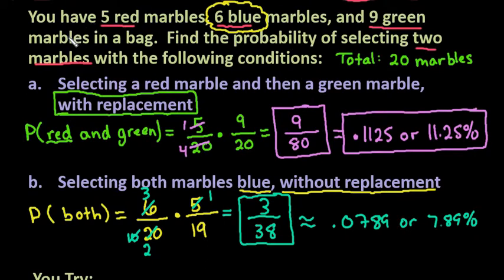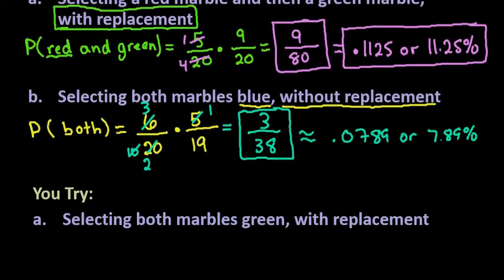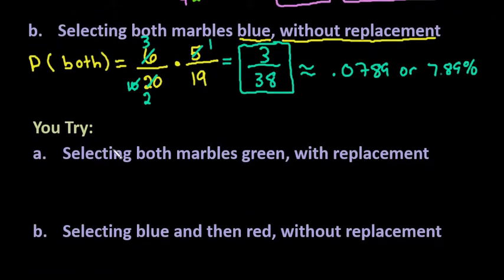You're going to use the same information — 5 red marbles, 6 blue marbles, and 9 green marbles with a total of 20 — to answer two practice questions. Try finding the probability of selecting both marbles green with replacement, and then selecting blue and then red without replacement. Once you've tried these two, go ahead and resume watching and I'll go over them to make sure you got it correct.